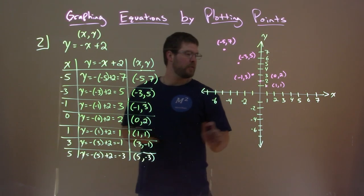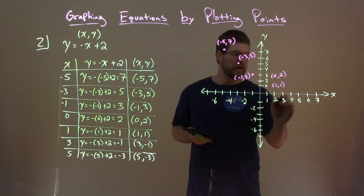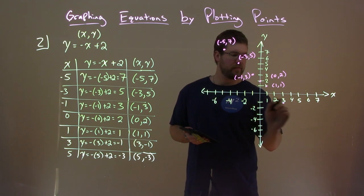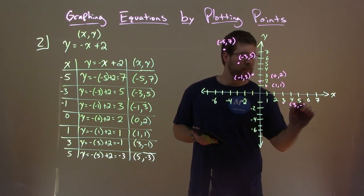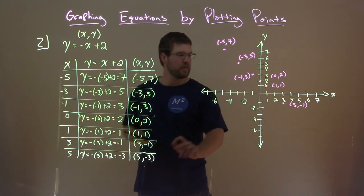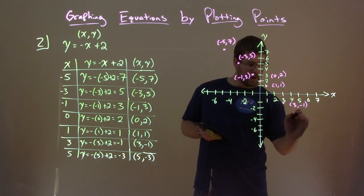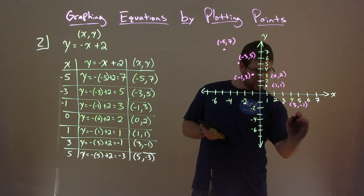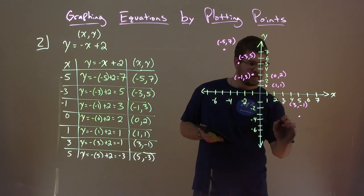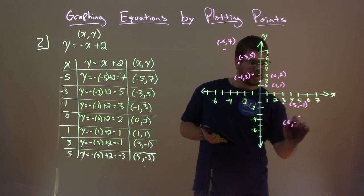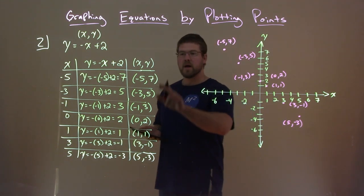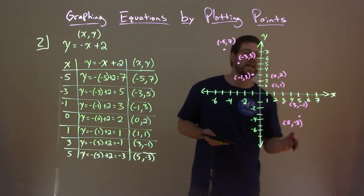Almost to the end. 3 comma negative 1. Positive 3 on the x axis, negative 1 on the y, which is right here. And lastly, 5 comma negative 3. 5 on the x, negative 3 on the y, roughly right here. So now we've plotted all these points. We need to connect these dots.